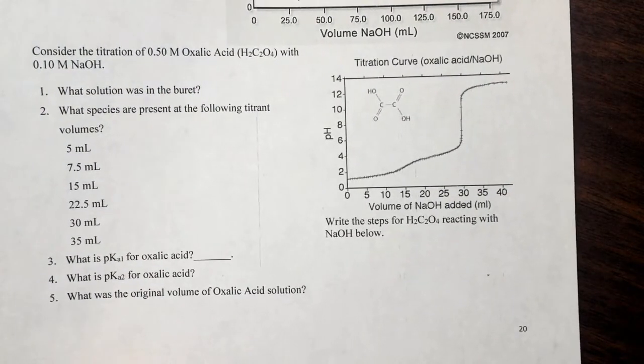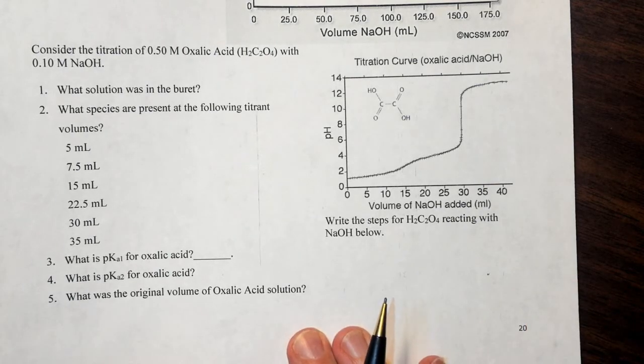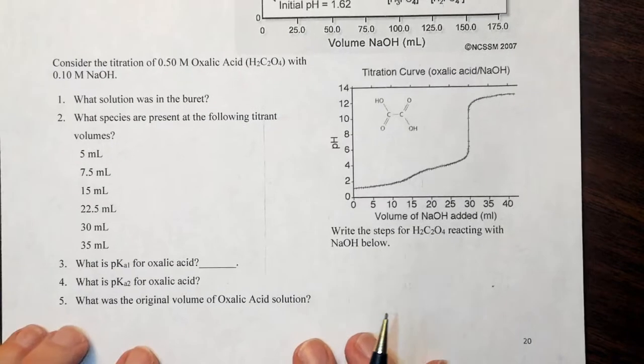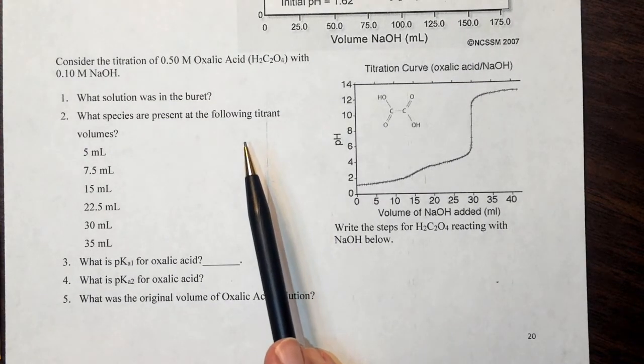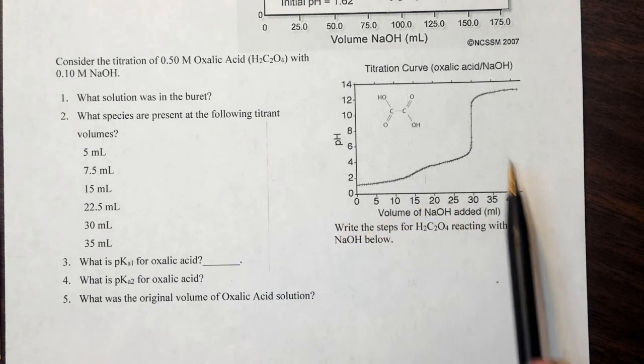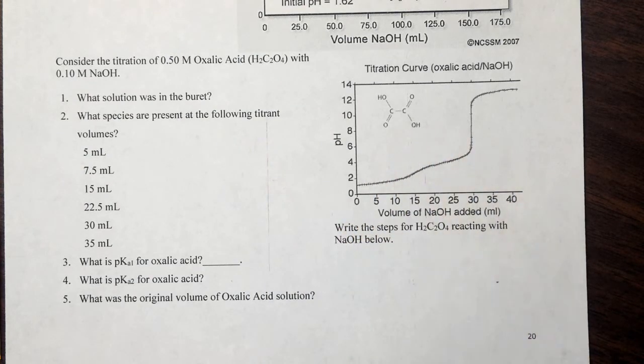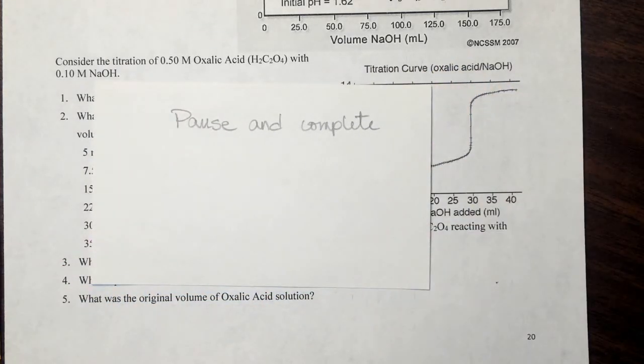So now let's consider the titration of oxalic acid with the formula shown here. What you need to do is identify what solution was in the burette, what species are present at the following titrant volumes. So you're going to do what we just did with the titration curve right here. I want you to pause and complete, and then we will go over the answers.